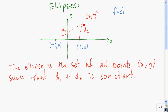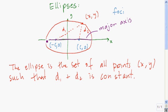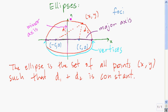If we were to graph all the points, it's going to look something like this. An ellipse is an object that's shaped like this. The longest axis here is called the major axis, and the endpoints of the major axis are called the vertices of the ellipse. The shorter axis is called the minor axis, and these two endpoints of the minor axis are called the co-vertices. The two foci always lie on the major axis.